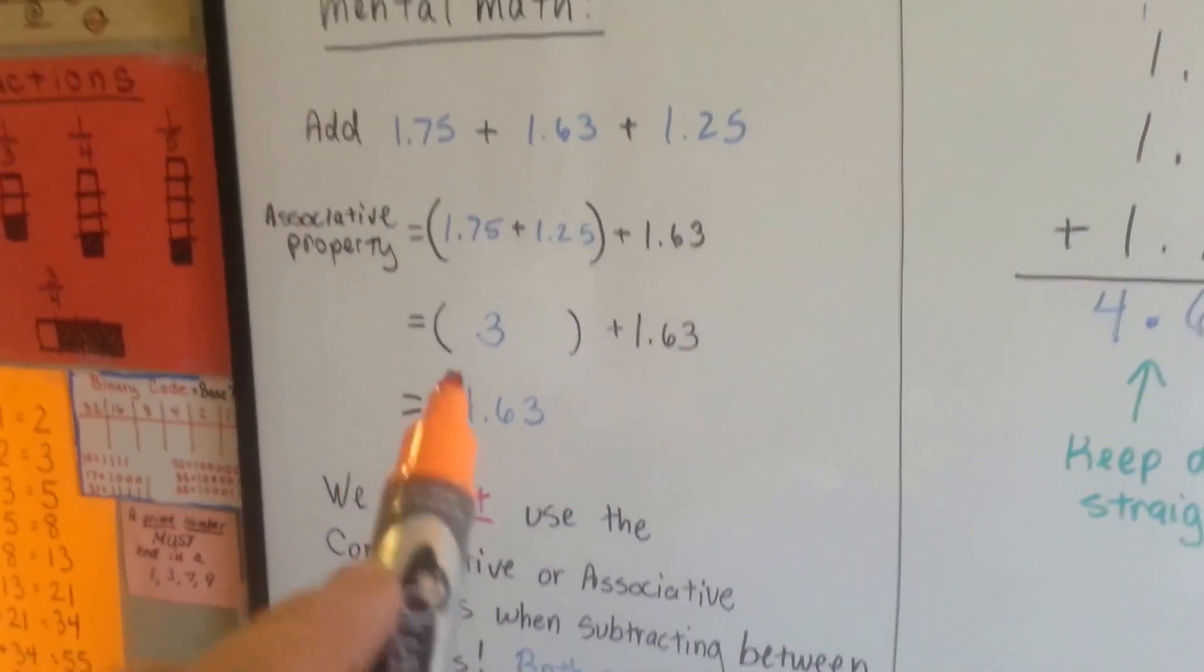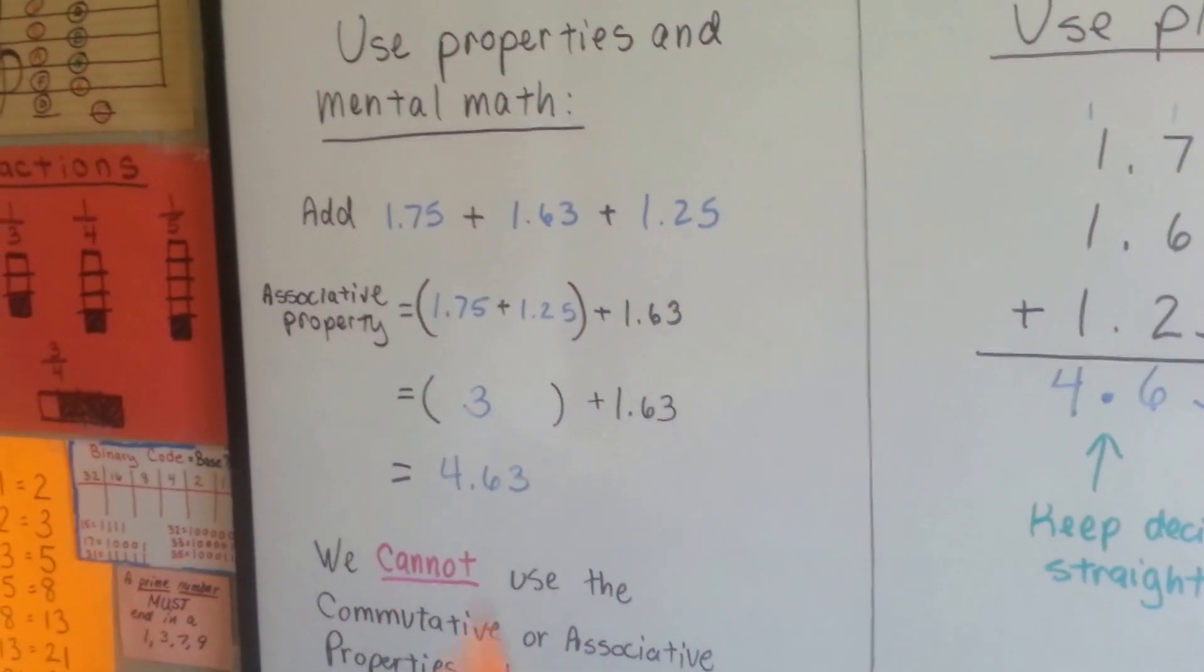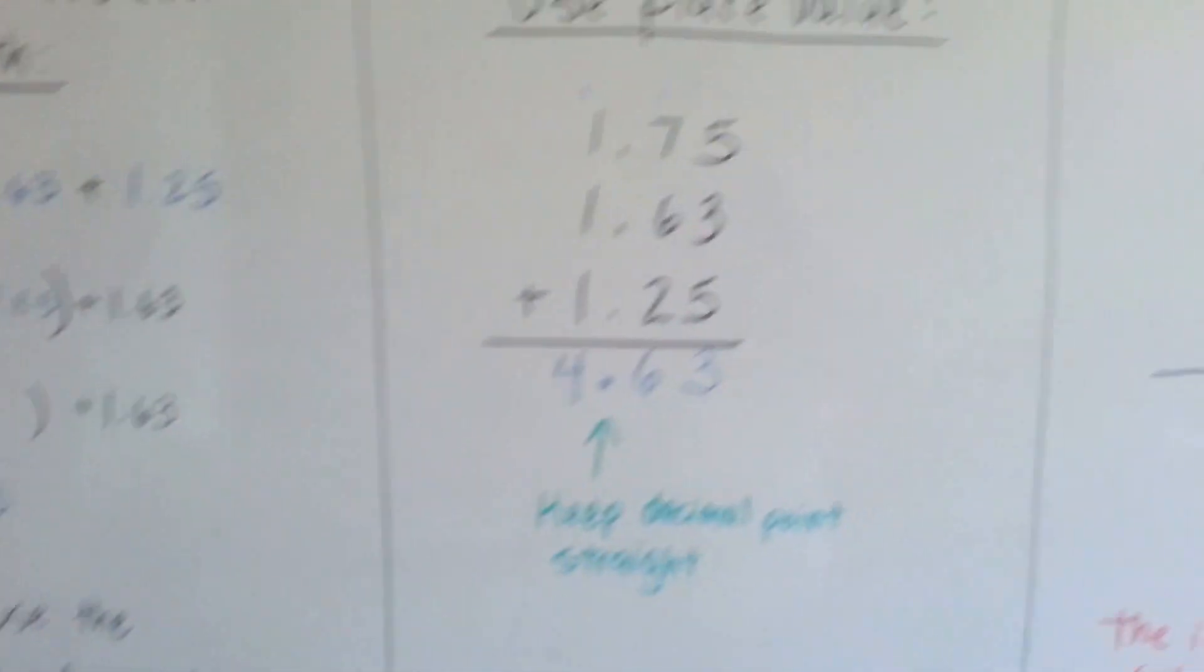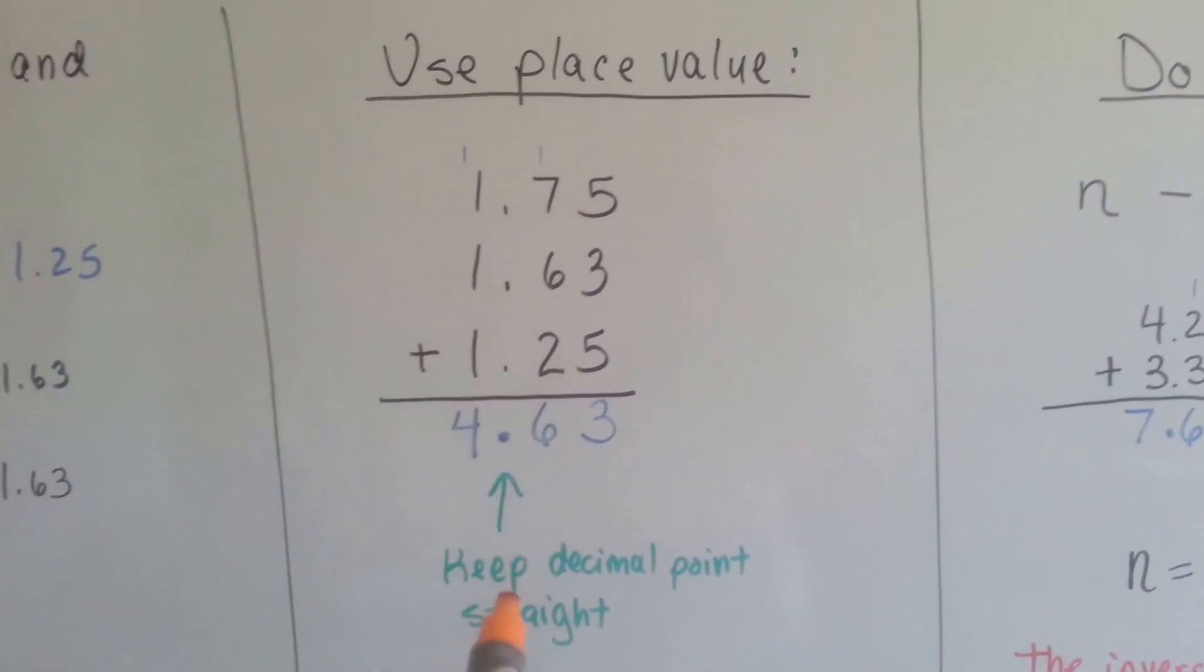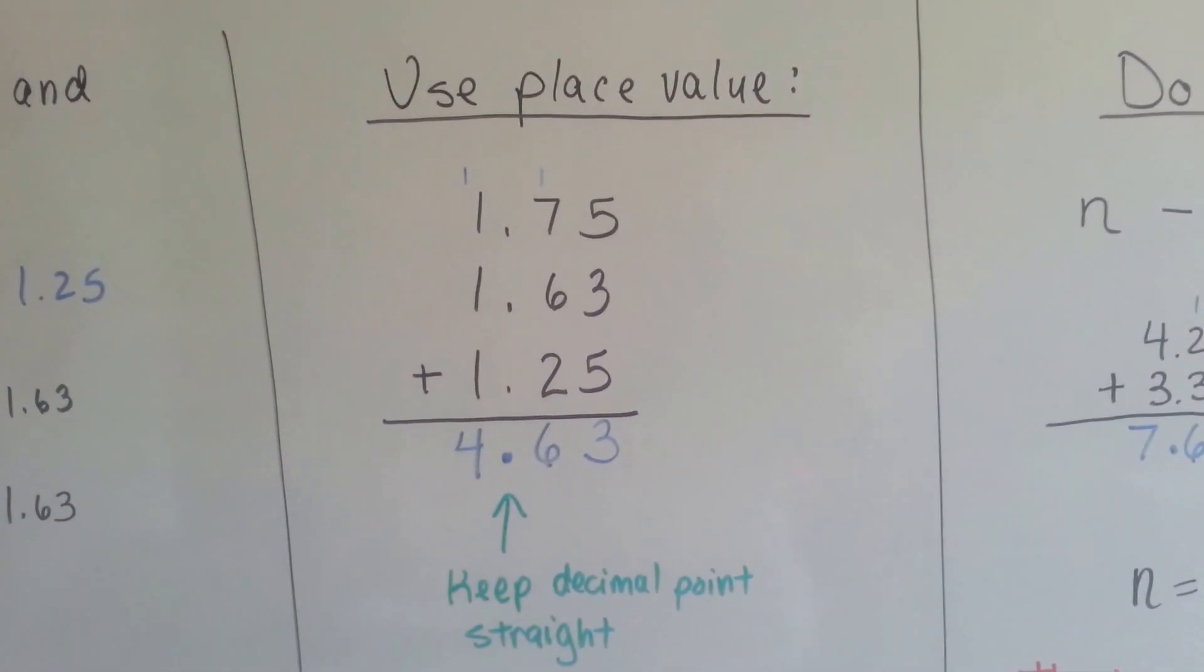So that would be using properties and mental math. You group together the two most compatible. You can use place values, you keep your decimal points nice and straight, and just add them up or subtract them.